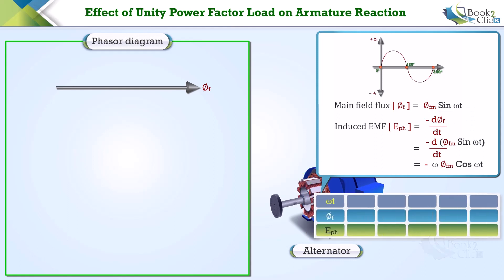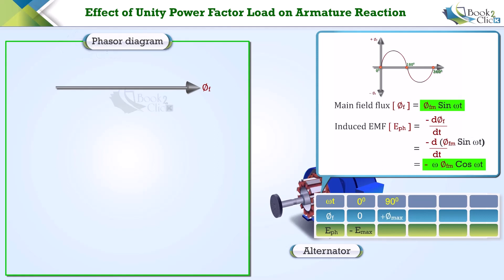Substitute the value of ωt as zero in both equations. At ωt = 0, the value of the main field flux is zero and the induced EMF is maximum with negative polarity. If you substitute ωt = 90°, the value of the main field flux is maximum with positive polarity and the induced EMF is zero.